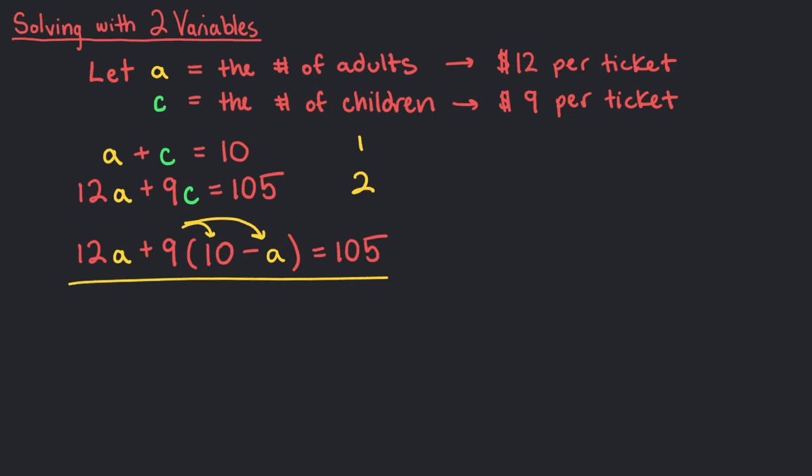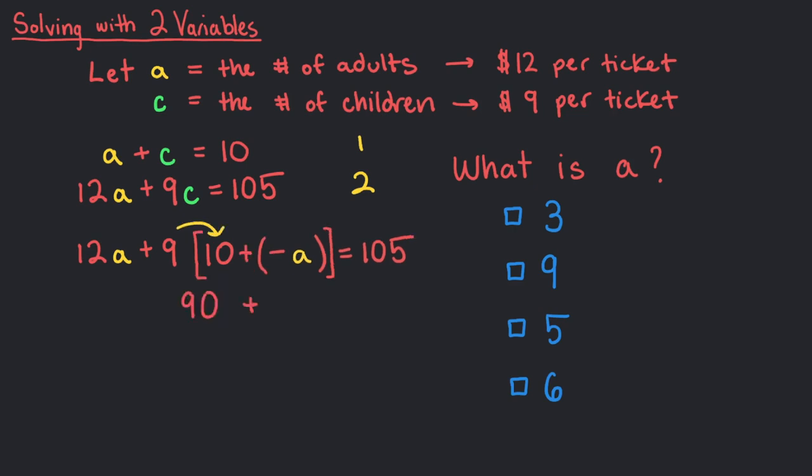We use the distributive property of multiplication to figure out 9 times 10 minus a, and then combine like terms. What is a? We multiply 9 by 10 to get 90, and then add the 9 times a. Our equation now looks like this: 12a plus 90 minus 9a equals 105.